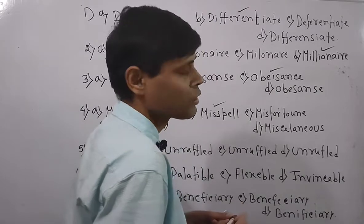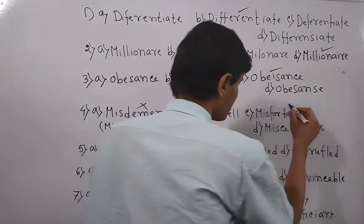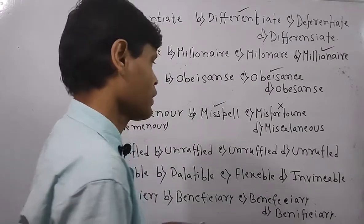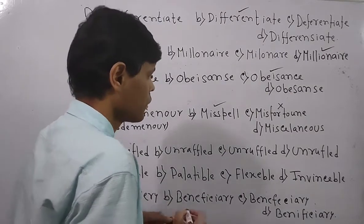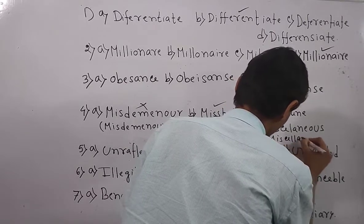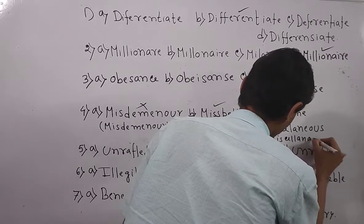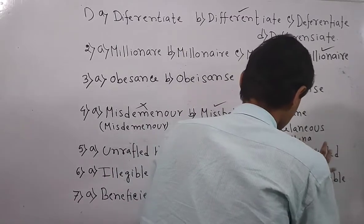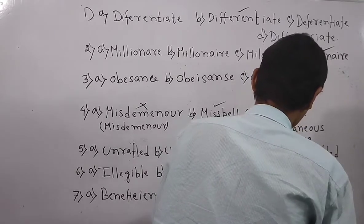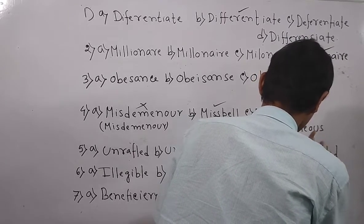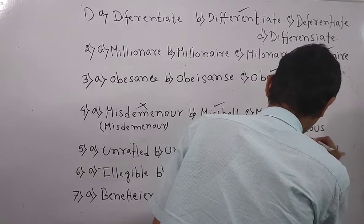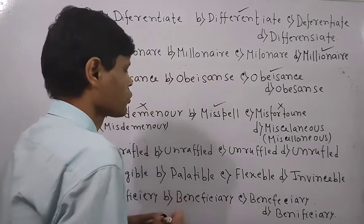The next word is 'misfortune' — not 'misortune.' The correct spelling is M-I-S-F-O-R-T-U-N-E, not T-O-U-N-E. The following word is 'miscellaneous.' The correct spelling is M-I-S-C-E-L-L-A-N-E-O-U-S — double L must be there.